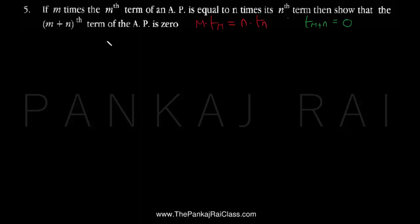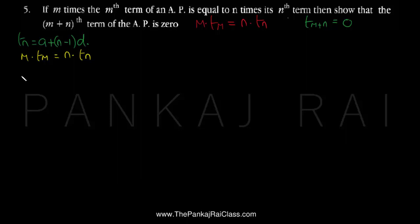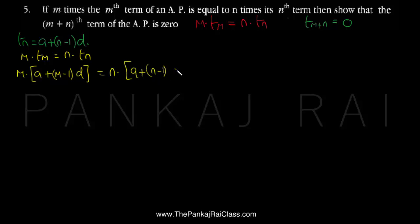Let us begin with the formula of Tn, which is a plus (n minus 1) into D. We have been given that m into Tm equals n into Tn. So Tm is a plus (m minus 1) into D, and Tn is a plus (n minus 1) into D.